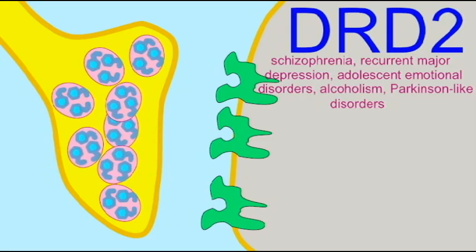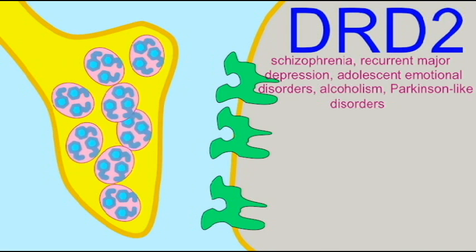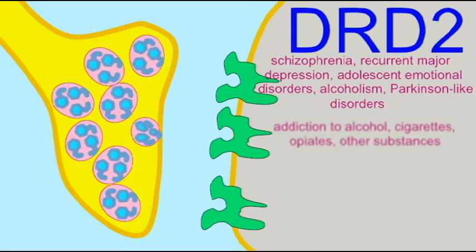In studies of those who are addicted to various substances, such as alcohol, cigarettes, opiates, and other drugs, it has been shown that some alleles are more common in those who suffer addiction than other alleles, which suggests that some alleles of this gene may offer some predisposition to addiction.